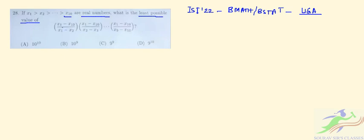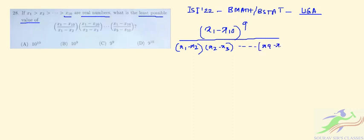So here we can see that this is nothing but x1 minus x10. So in the denominator x1 minus x2 and the last expression you can see in the numerator is x1 minus x10 by x9 minus x10. So in the numerator we will have this x1 minus x10 to the power 9 and the denominator will be as it is that is x1 minus x2, x2 minus x3 up to we have this x9 minus x10.